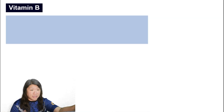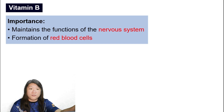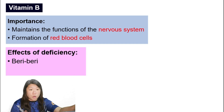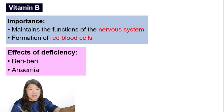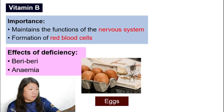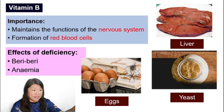Vitamin B maintains the functions of the nervous system and the formation of red blood cells. If we do not have enough vitamin B, it can cause beriberi and also anemia — a disease where the body lacks red blood cells. Sources of vitamin B include eggs, liver, and yeast, which is something we use in making bread.